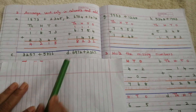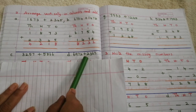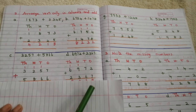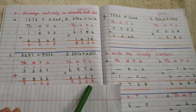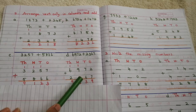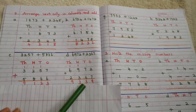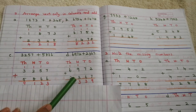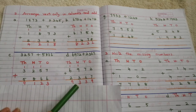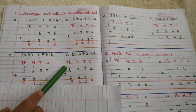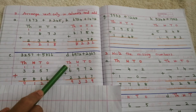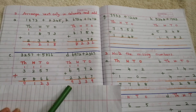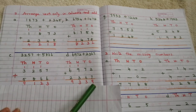Problem D: 6,972 plus 2,367. Adding 7 plus 2 is 9. Then 7 plus 6 is 13 — write 3 here and carry 1. Then 9 plus 1 is 10, 10 plus 3 is 13 — write 3 here and carry 1. Finally, 6 plus 1 is 7, 7 plus 2 is 9. Answer: 9,339.